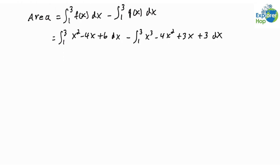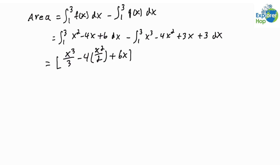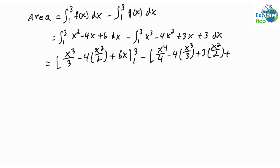Now we take the anti-derivative of both functions and evaluate them from 1 to 3. This is equal to the anti-derivative of f(x): x³/3 - 4·x²/2 + 6x, evaluated from 1 to 3, minus the anti-derivative of g(x): x⁴/4 - 4·x³/3 + 3·x²/2 + 3x, evaluated from 1 to 3.